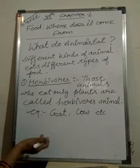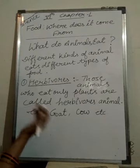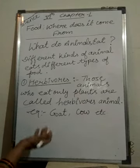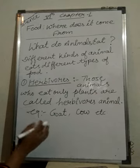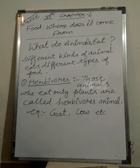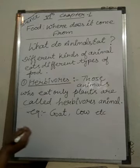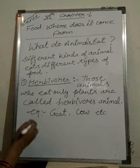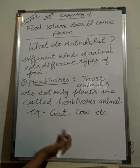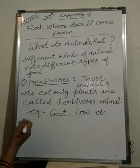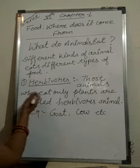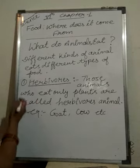All the living organisms and animals eat different kinds of items, different kinds of food. Different kinds of animals eat different kinds of food according to their category, and there are three categories.